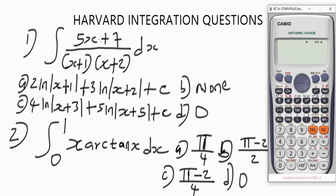Question 1 is indefinite integration, and that's the reason we stored a number. For indefinite integration you have to store a number. For definite integration like question 2, which has upper and lower limits, you don't need to store a number. For indefinite integration the idea is to evaluate or simplify the question with the stored number and then differentiate the options to verify your answer.